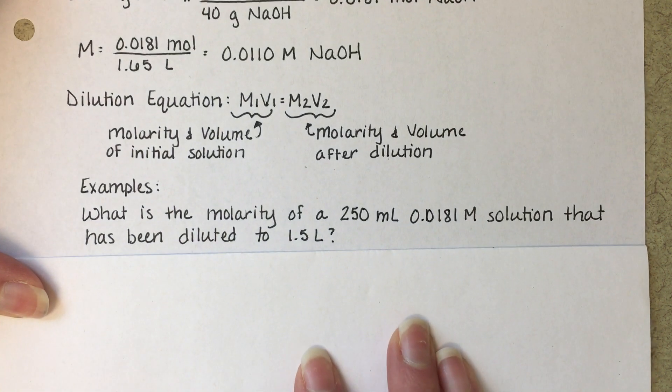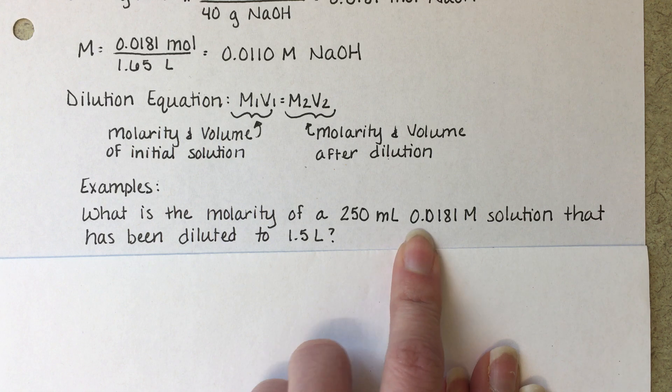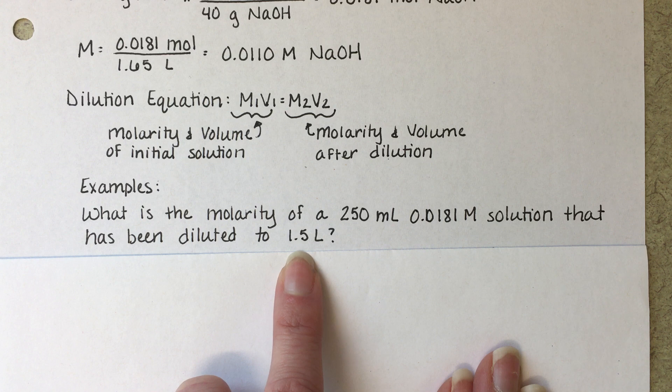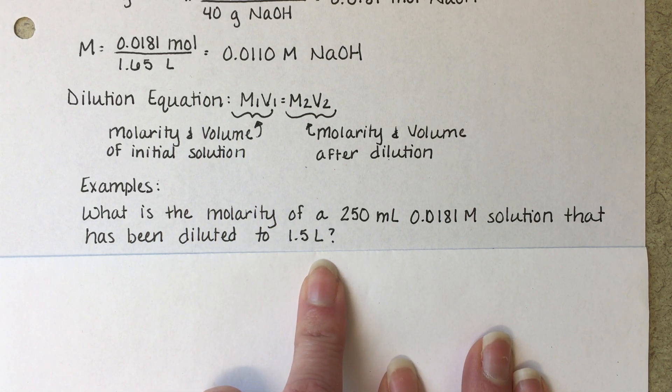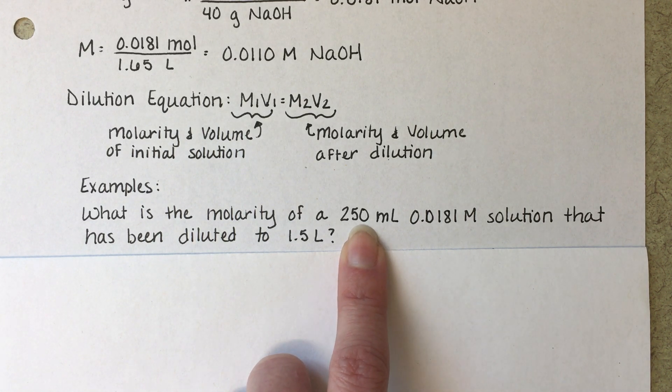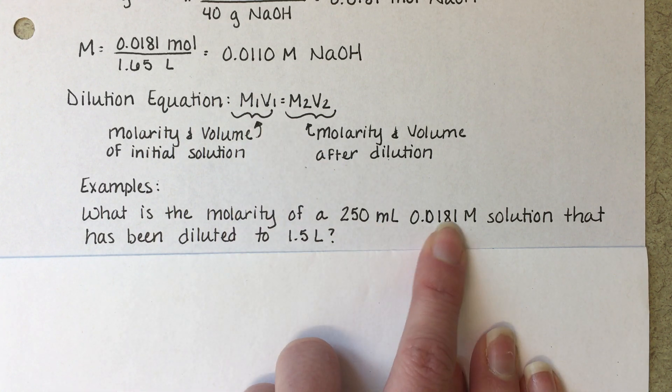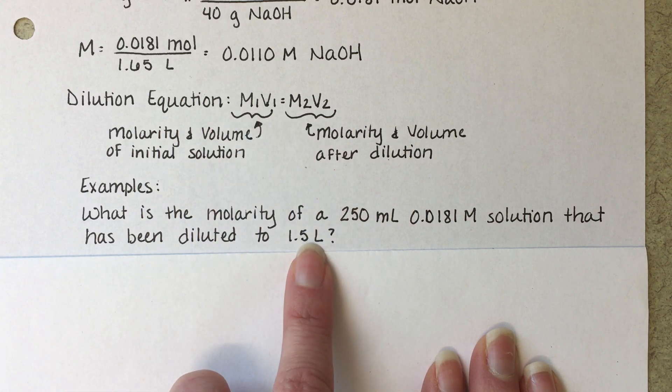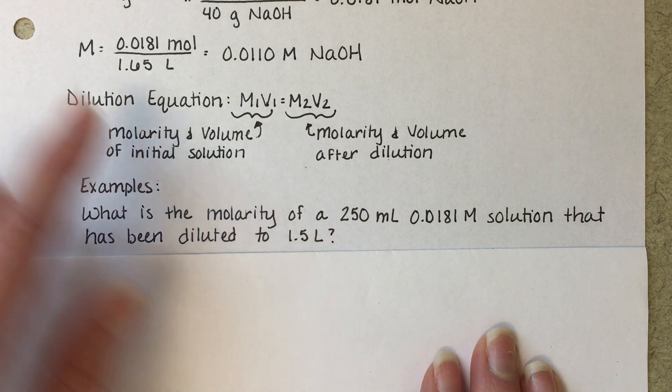Here's one example. We have a solution that is 250 milliliters of 0.0181 molar and we're going to dilute it to a new volume of 1.5 liters. We want to know what its molarity would be after the dilution. So the 250 milliliters is our V1 initial volume. 0.0181 is our M1 initial molarity. 1.5 liters is our V2, the volume after dilution. And M2 is what we're trying to solve for.